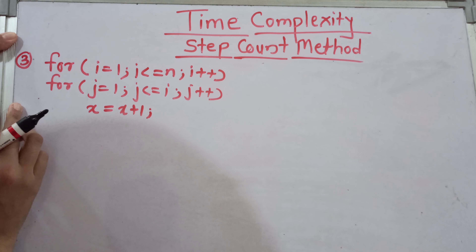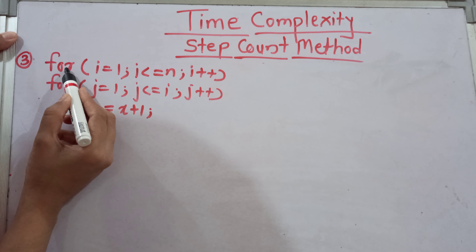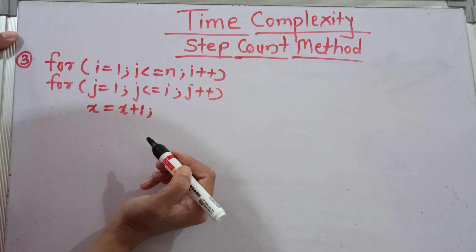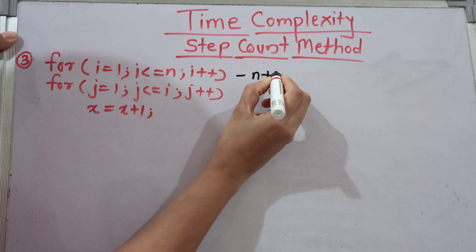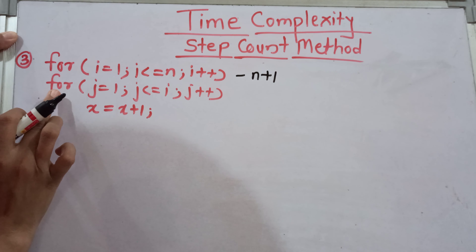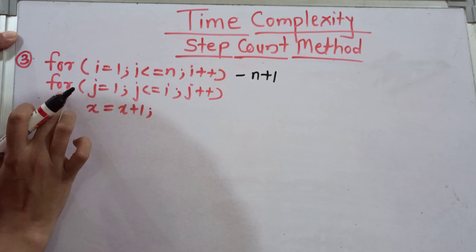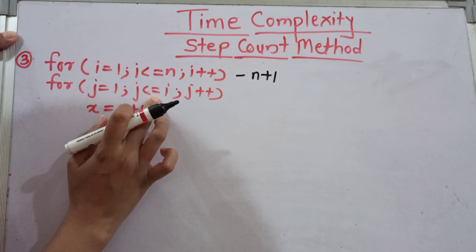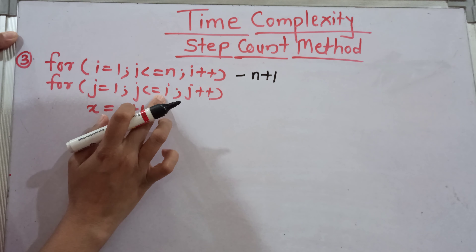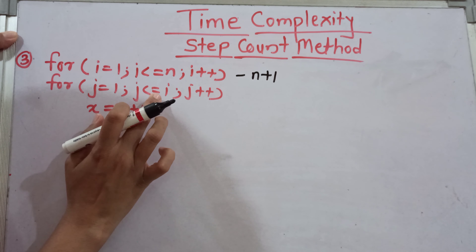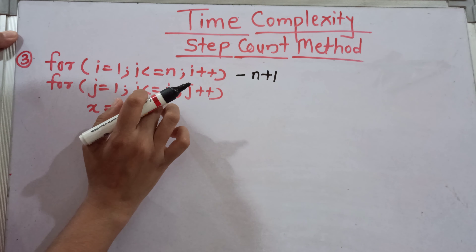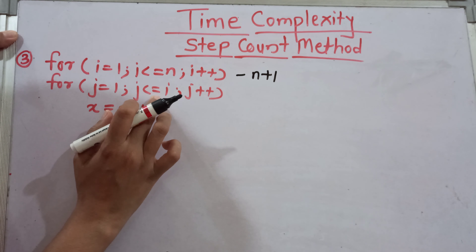Now we will see the next example. The first for loop is: for i is equal to 1, i is less than or equal to n, i plus plus — we can directly say the step count is n plus 1, as we have seen. For the second instruction, there is a for loop starting from 1, but the termination condition is j is less than or equal to i. This termination condition depends on the value of i — it is not independent like n. So we have to carefully calculate the step count for this second instruction.